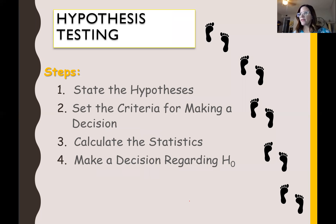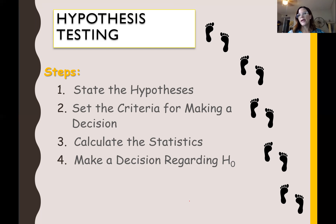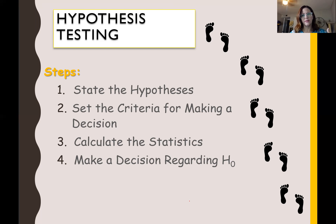We always state our hypotheses first — the null and the alternative. With those hypotheses, we need an independent variable, a dependent variable, and direction if hypothesized. Then we set the criteria using the alpha level and find the critical value. Next we calculate the statistics — our T statistic, effect size, and confidence interval. Once we have all that information, we make a decision regarding the null and state it in APA format. There are some critical differences though: for every different test, there is a different APA format with some different nuances.